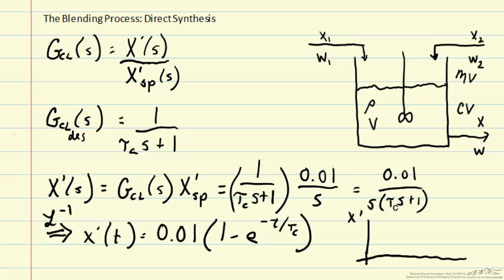So we can sketch that, x prime versus t. Our set point value is 0.01. We start off at 0, and then we come up and approach 0.01 at a time scale of tau c.